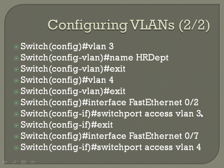That's really the only configuration you need for assigning it. Exit out of there, and then for VLAN 4, we'll do the same thing. In this case, for FastEthernet0/7, 'switchport access VLAN 4'.